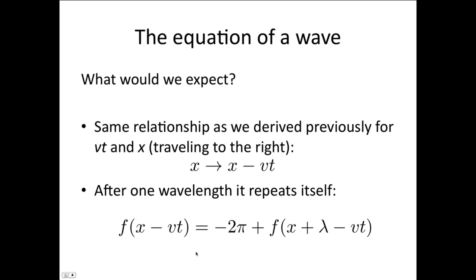So this function, the f of x minus vt, is going to give some answer in radians. So we would expect that if x progressed by one wavelength, so in time that would be one period, then it's going to be an additional 2π on.